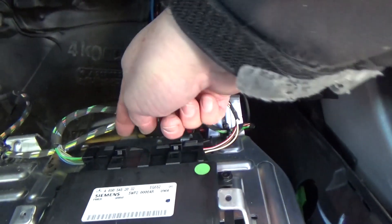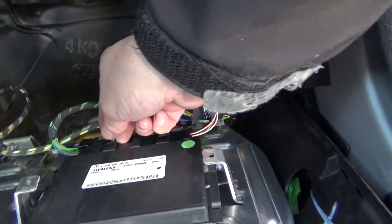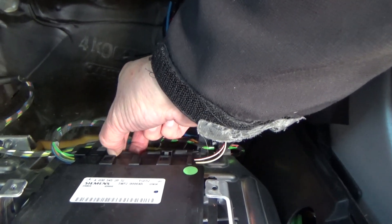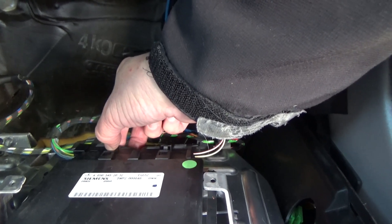So the connector we're going to pull out is this left connector, and we push on the tab, right there, and pull the connector out.